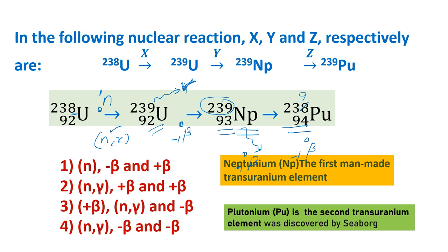Therefore, the sequence is N-gamma followed by 2 beta decays, and in the given options, option 4 is the correct answer. This equation is a classical example of a transmutation reaction and a neutron capture reaction which resulted in the formation of plutonium. This reaction is popular in fast breeder reactors wherein fissionable uranium can be converted into fissile plutonium. I hope you understood. Thank you.